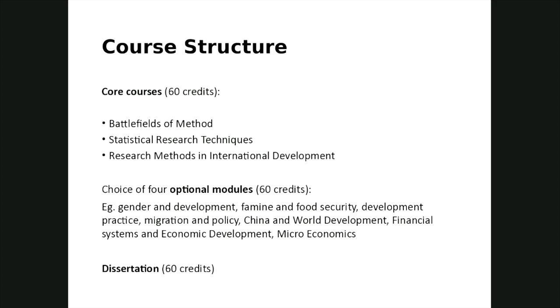You would normally choose four options of 15 credits each — some options may be 30 credits — so that would mean you could have between two to four optional modules. This gives you the scope to explore two areas of personal interest, whether thematic or geographical areas of interest. For example, you can choose specifically to focus on China, or make choices to look at other regions of the world as well.